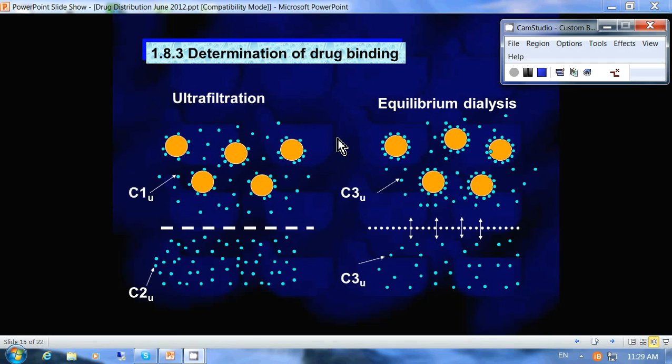We know that unbound drug is important because it's the drug that binds to the receptor site, it's the drug that undergoes glomerular filtration in the kidneys, and it's the drug that undergoes metabolism in the liver. And it is also the drug that crosses membranes. So it's important to know how much of the drug is unbound.